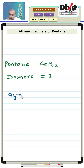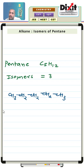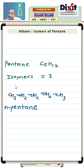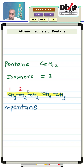First is the straight-chain compound. In the common system, it is known as n-pentane. In the IUPAC system, it is known as pentane.